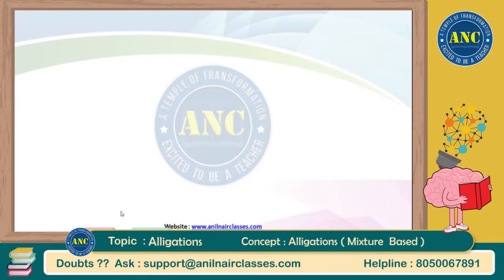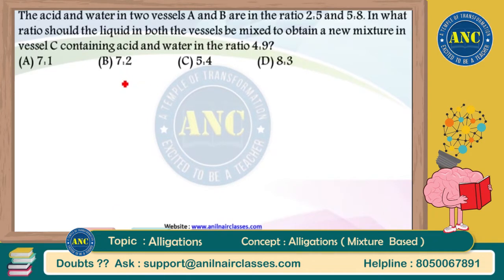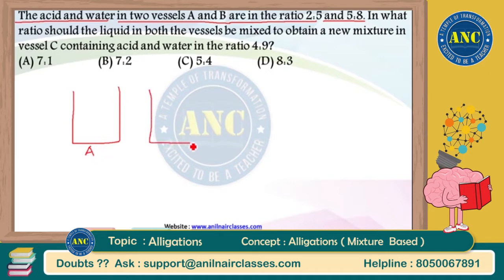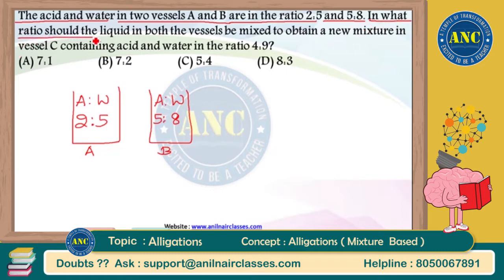Now please see the next varieties of questions in allegations. The acid and water in two vessels A and B are in the ratio 2:5 and 5:8. In vessel A the acid and water ratio is 2:5, and in vessel B it is 5:8. In what ratio should the liquid in both vessels be mixed to obtain a new mixture in vessel C containing acid and water in the ratio 4:9?